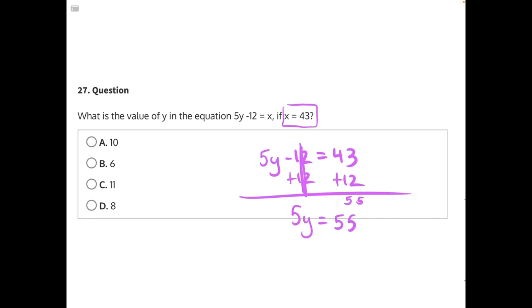The last step is to do opposite operations again. y is being multiplied by 5, so we need to divide both sides by 5. These 5s will cancel. y equals 55 divided by 5 is 11, making C our correct answer.